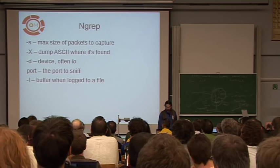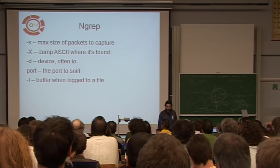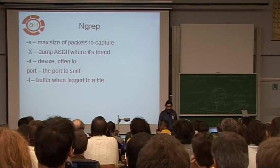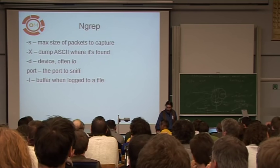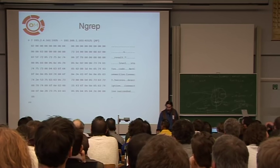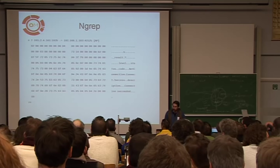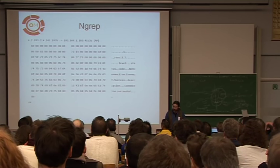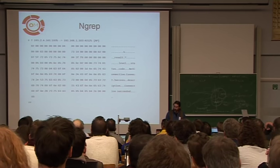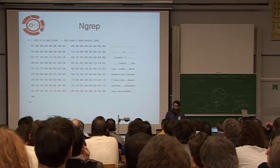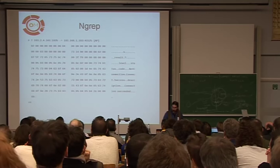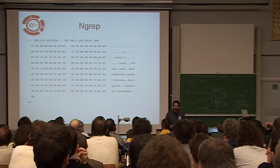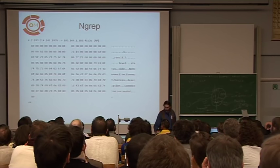NGREP has actually got very similar options to tcpdump — they change the device options and silly things like that, but a lot of the other options are the same. NGREP looks a bit cleaner — the output is cleaned up and it's a little bit easier to read sometimes than tcpdump. This is actually a decoded RTMP packet right here — because it has a lot of text in it, you can see this is the result message from connecting the network connection to the server side.